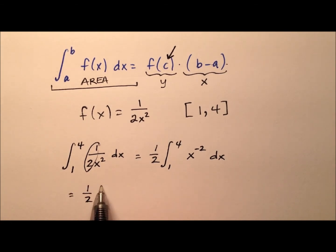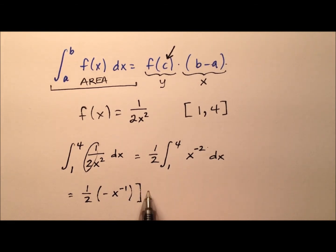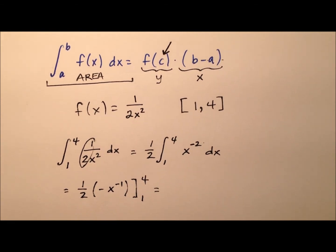So let's go ahead and integrate this. So we have one half times the integral here. So we have x to the negative two, I'm going to add one to that power, so I have negative one. And then I'm going to divide by that new power, so dividing by negative one just does that right there. And we're going to be doing this from 1 to 4.